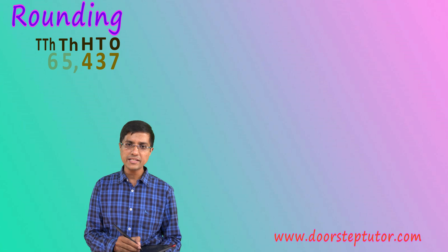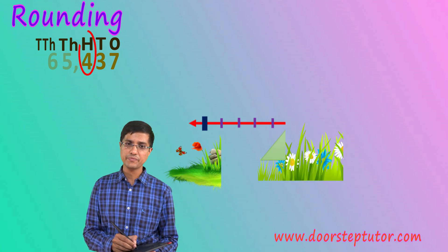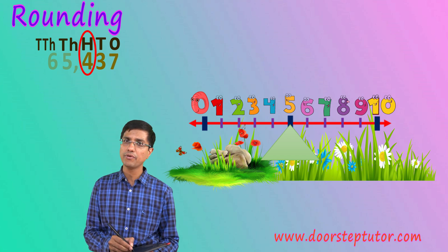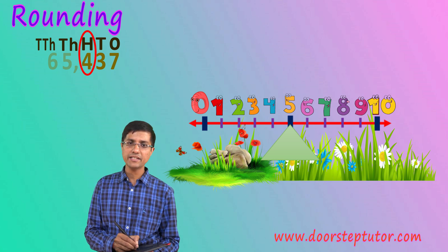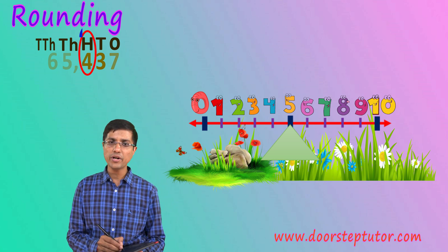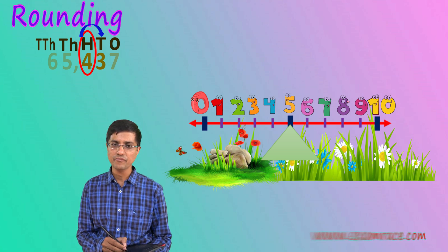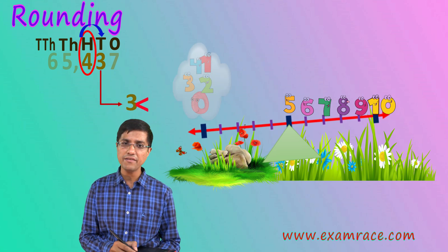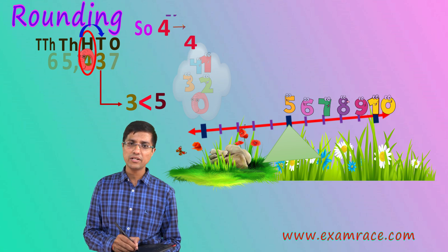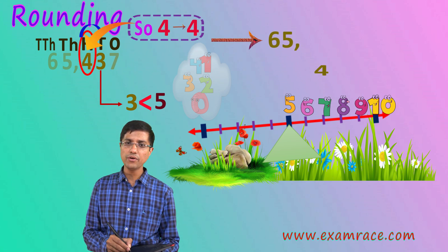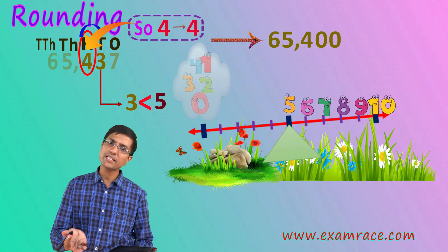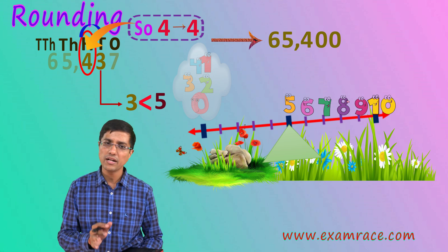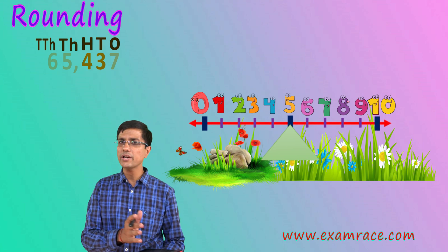Let's try to round 65437 to the nearest hundreds. Hundreds is this digit, and I look at the number right next to it, which is tens. I don't bother looking at ones at all. The tens digit here is 3, which is less than 5, so I don't touch the hundreds digit. This becomes 65400, and the numbers below become 00. That's correct because 437 is very close to 400 — no need to take it to 500.